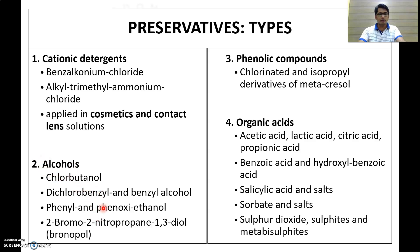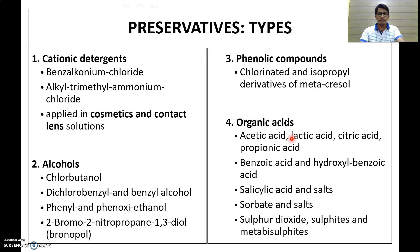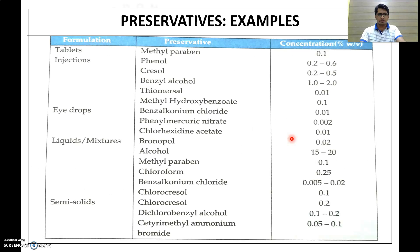Examples of alcohol preservatives include chlorobutanol, dichlorobenzyl alcohol, benzyl alcohol, phenol, and phenoxyethanol, and 2-bromo-2-nitropropane-1,3-diol (bronopol). Phenolic compound examples include chlorinated and isopropyl derivatives of metacresol. Organic acids include acetic acid, lactic acid, citric acid, propionic acid, benzoic acid, hydroxybenzoic acid, salicylic acid, sorbate, sulfur dioxide, sulfate, and metabisulfate.